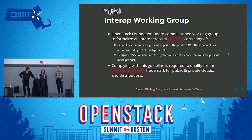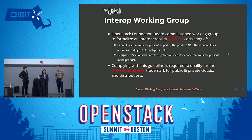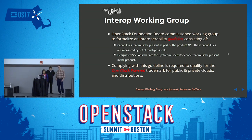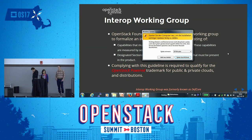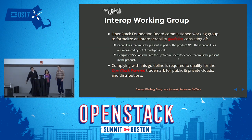So what does an interoperability guideline consist of? The guideline defines capabilities that must be present as part of the product APIs. The way to test the presence of these capabilities is through a set of must-pass tests. The guideline also defines designated sections — the OpenStack code that must be present in the product. Complying with these guidelines is required to qualify for the OpenStack Powered trademark for public, private, and distribution clouds since the beginning of 2015.